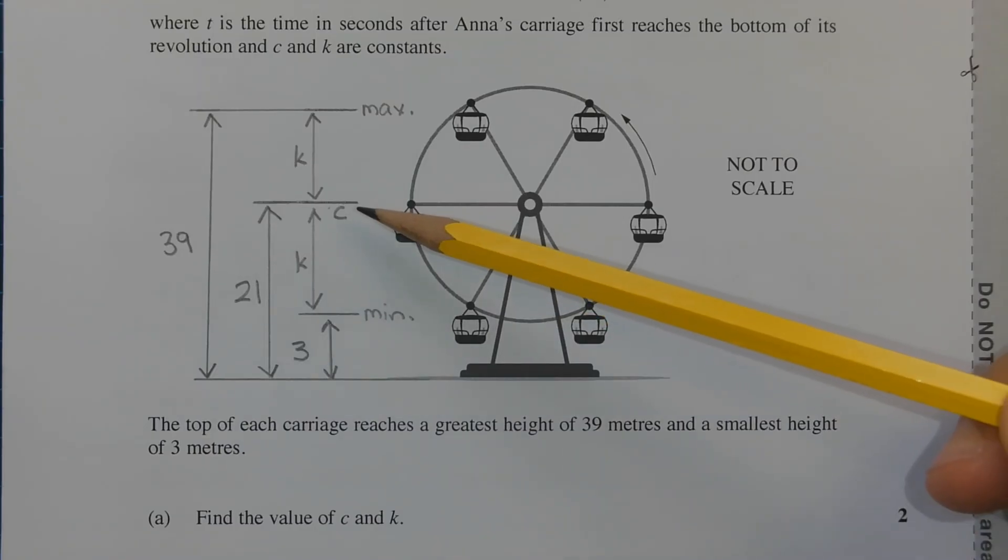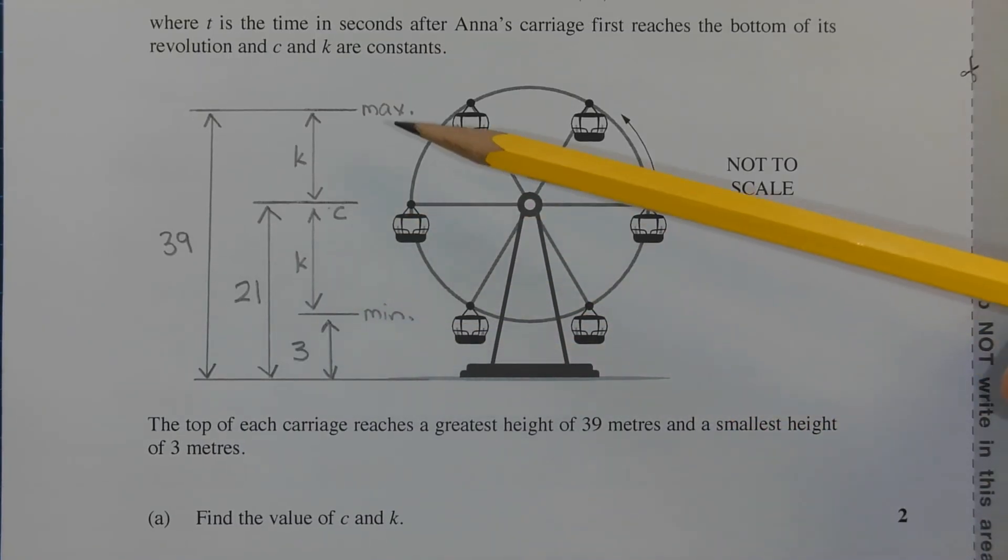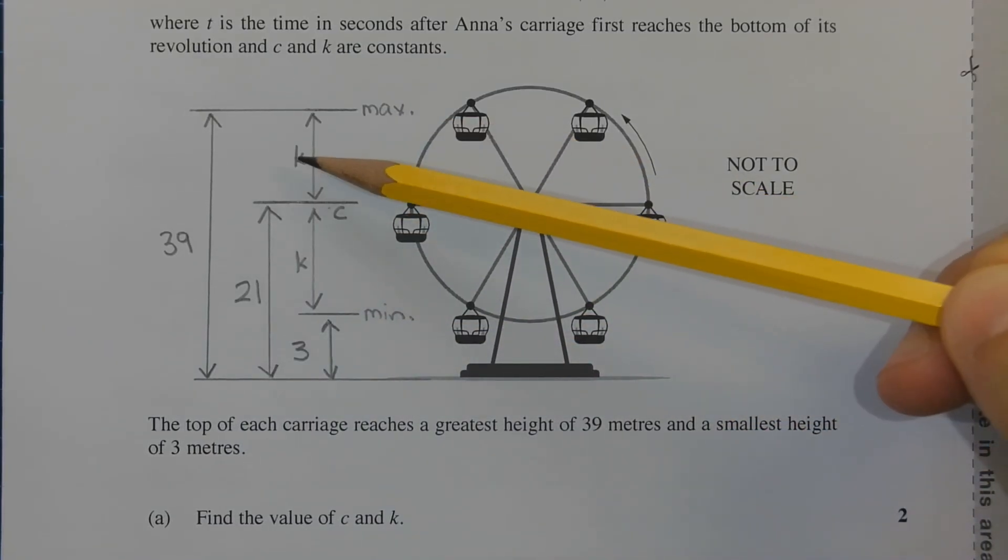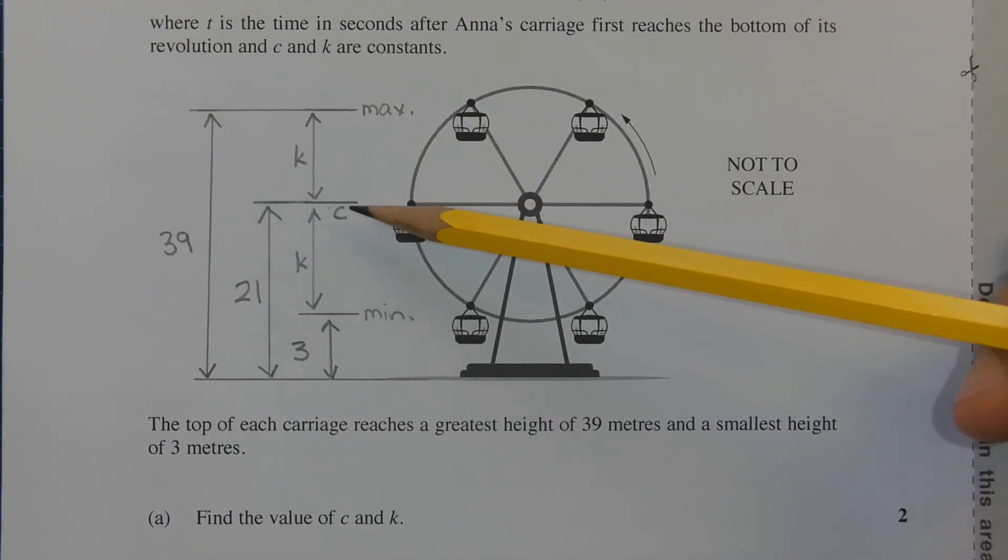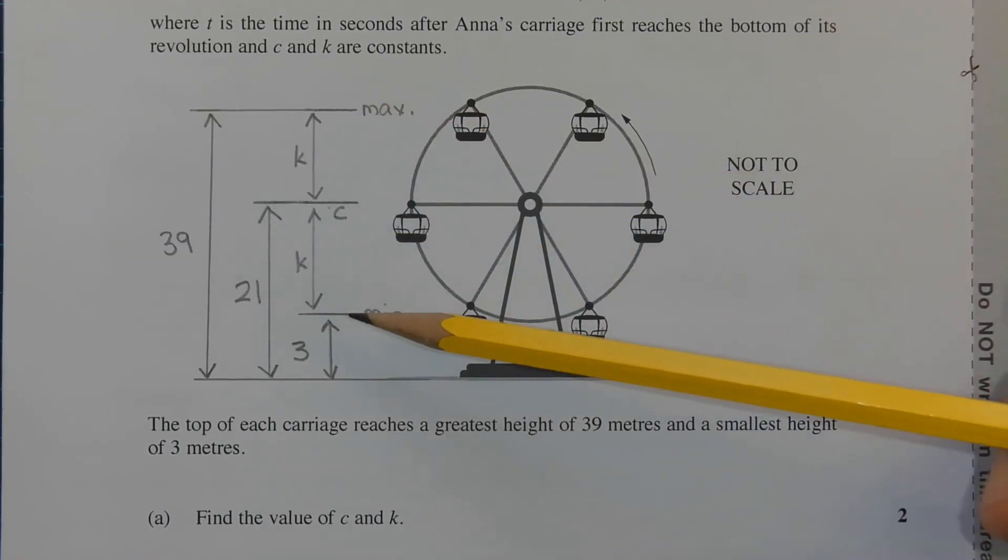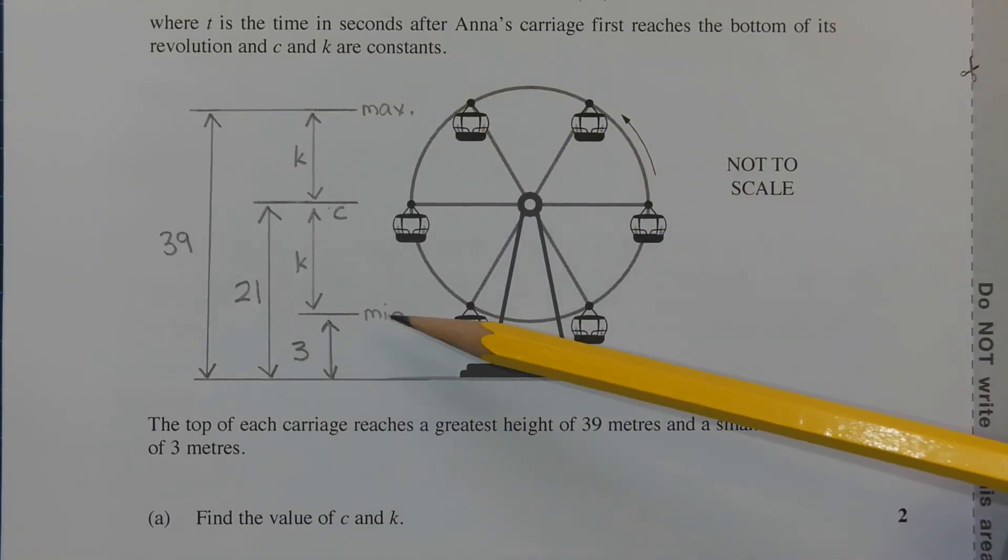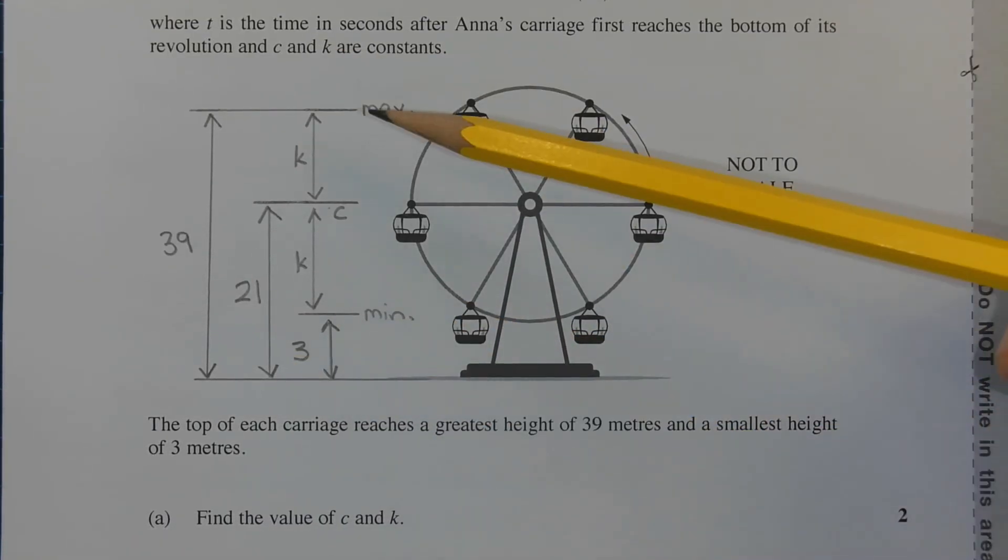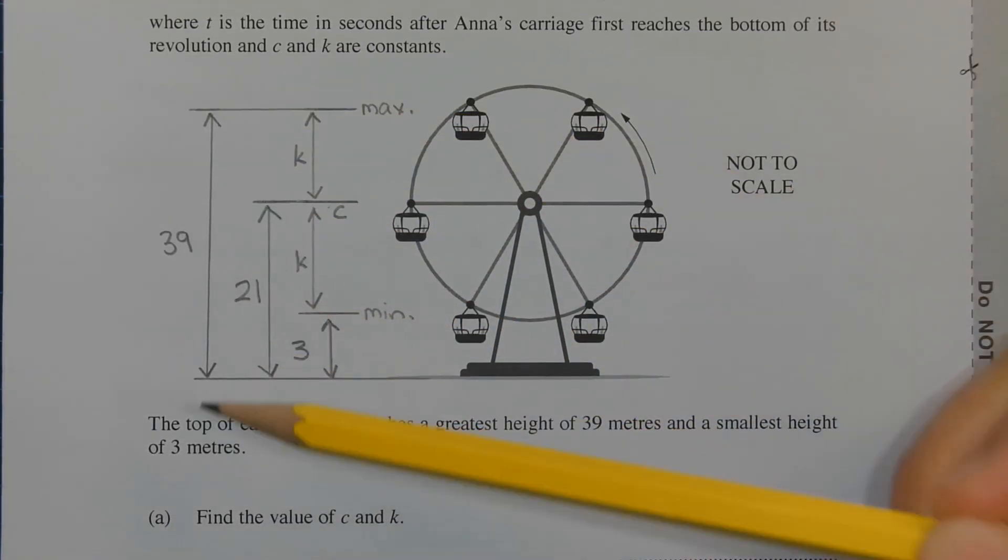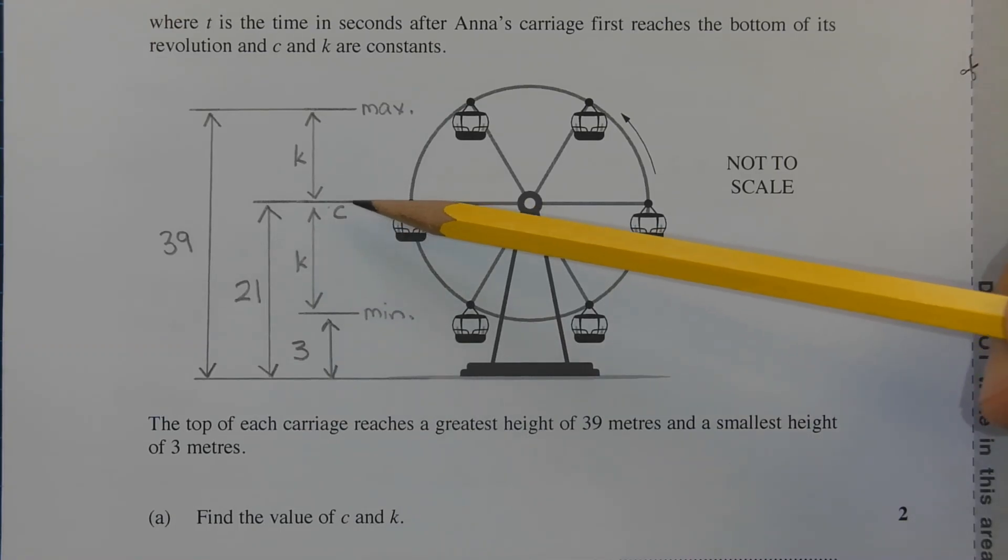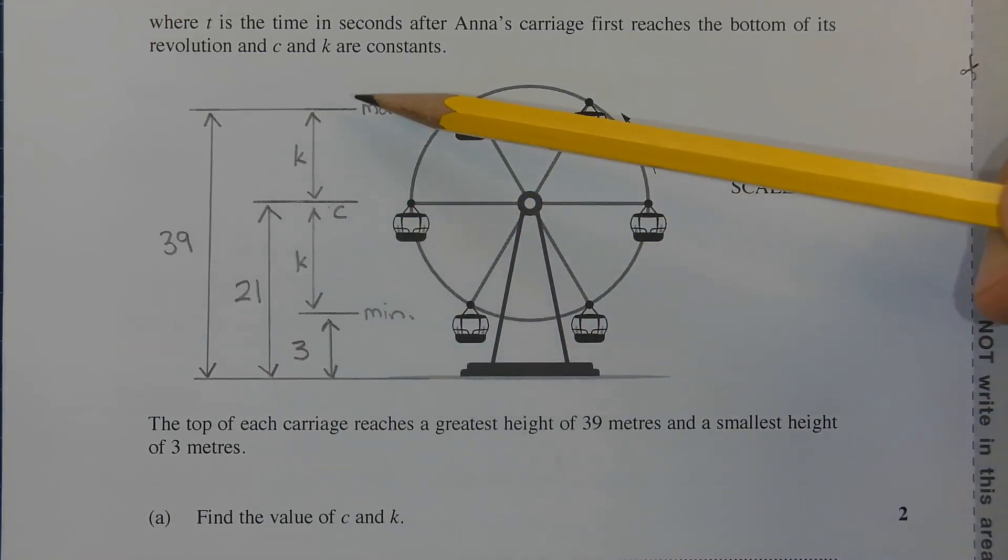C represents the line of centre between the minimum height and the maximum height, and k represents the distance between the line of centre to either the maximum or the minimum height. So I've sketched this here as a visual reference. We can see that the minimum height is 3 metres, the maximum height is 39 metres. C is exactly midway between the minimum height and the maximum height.